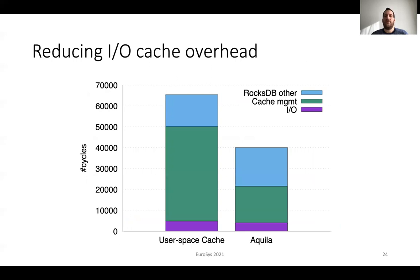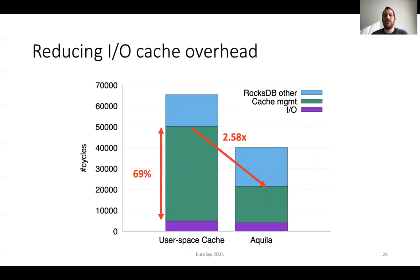To understand where these benefits come from, we provide a breakdown of storage cache management overheads. We show two bars: a user space cache configuration on the left and Akila on the right. In both cases we use RocksDB. The y-axis shows the number of cycles. Each bar consists of a purple part for IO, a green part for cache management excluding IO costs, and a light blue part for the remaining RocksDB cost. With a user space cache, 69% of the total execution time goes to cache management and cache accesses. With Akila, we reduce this cost by 2.58 times, resulting in 43% of the total execution time, leaving precious CPU cycles for further user processing.